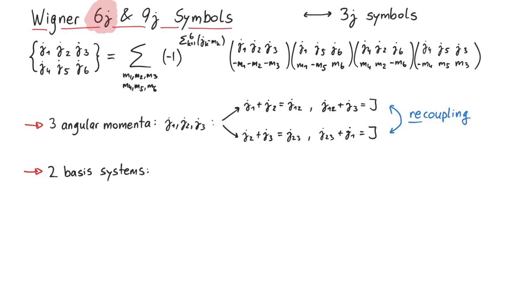In order to understand this, we have to realize that both j12, j3, jm, and j1, j23, jm, are complete sets of basis vectors. Therefore, there must exist a unitary transformation between those two basis systems.